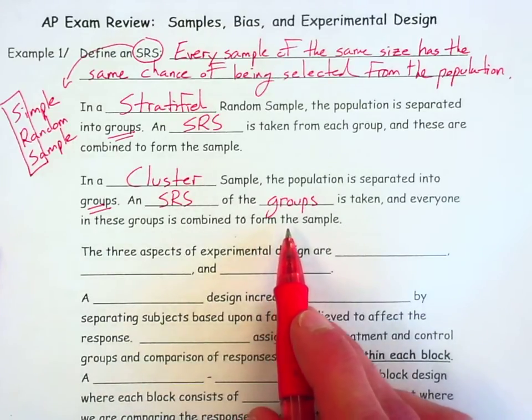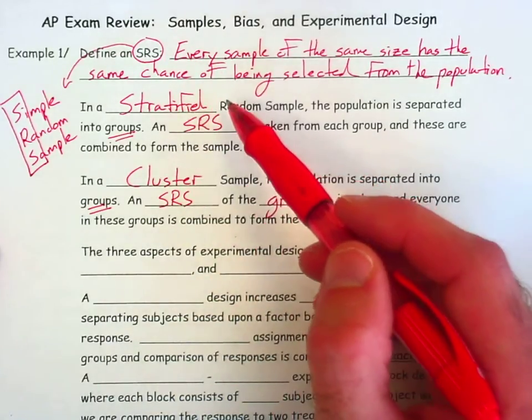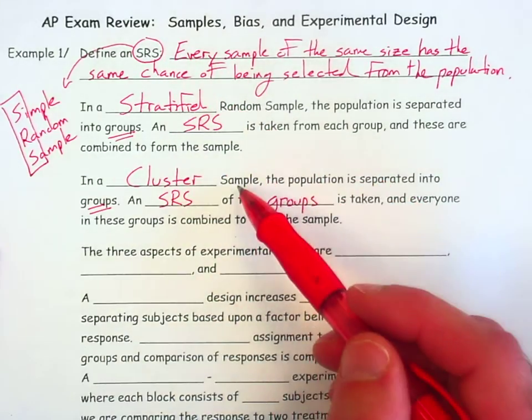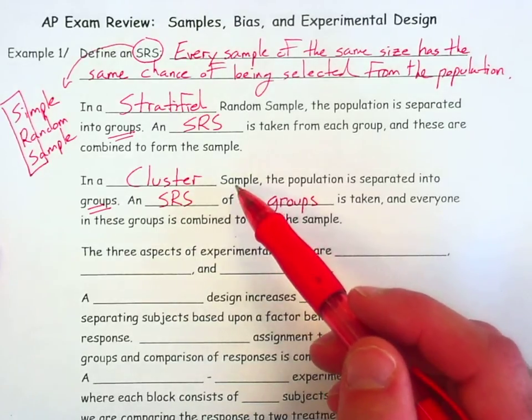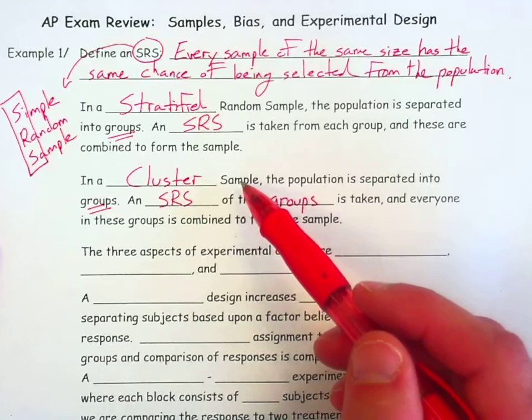So practice question number one, lower on the page, parts A, B, and C, applies SRS, stratified sample, and cluster sample in the context of sampling at our school. I think it gives you a better idea of what these look like in context. I think it will be helpful to do that question.